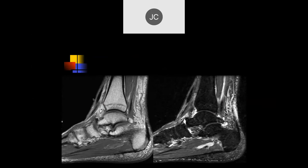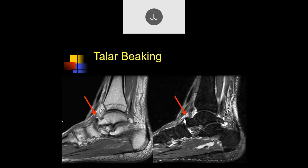There's some incongruity of the dorsal talonavicular joint and a spur there. This is called talar beaking. If you see it in a young person, you need to look for congenital fibrous or bony fusions — that's the classic cause of talar beak. Repetitive trauma, such as seen with ballerinas, can also produce this condition.